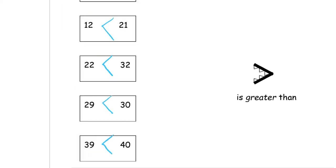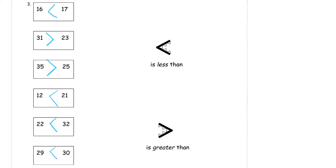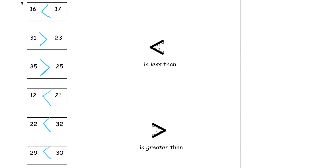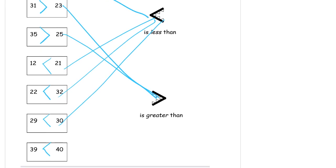Okay so 16 is less than 17 boom less than. 31 is greater, greater than. 23 greater than 35 is greater than 25 greater than. 12 is less than 21 less than. 22 is less than 32 less than. 29 is less than 30 less than. And then our last one 39 is less than 40 that's a less than also.